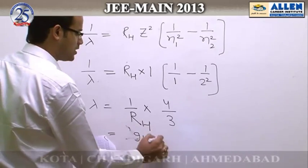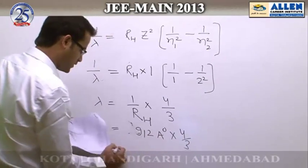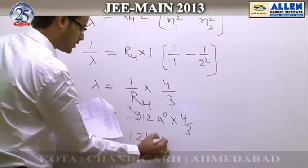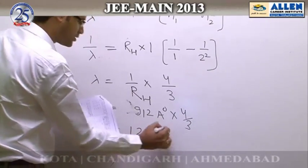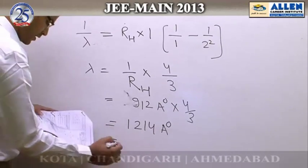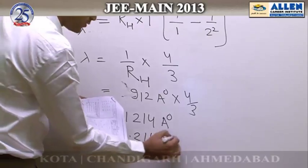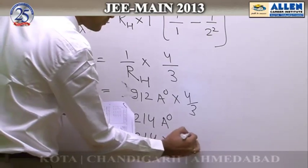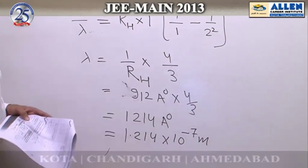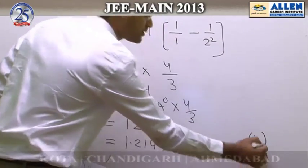Continuing, 1/R_H equals 912 Å, so λ = 912 × (4/3) which comes out to be 1214 Å. Converting to meters, that is 1.214 × 10⁻⁷ m. Therefore, the correct answer is option 1.